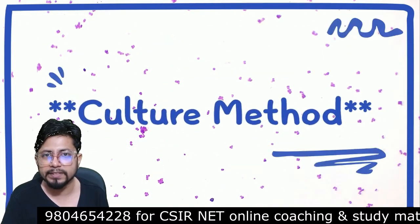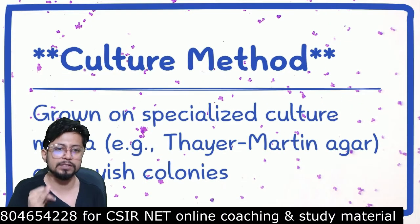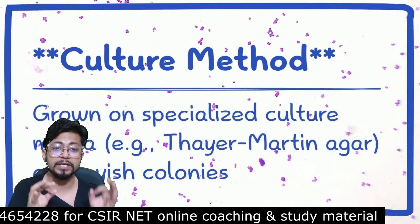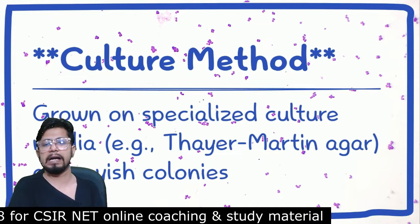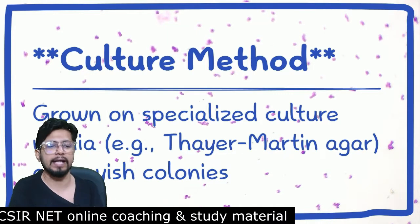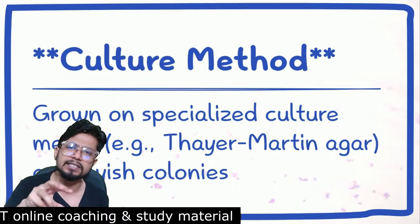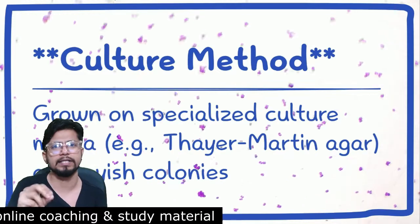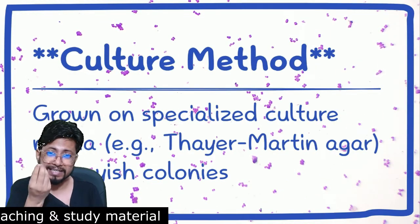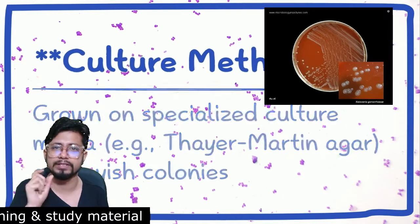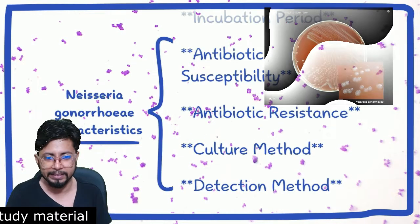Regarding culture methods, Neisseria gonorrhoeae is grown on specialized culture media — for example, Thayer-Martin agar. On Thayer-Martin agar, it produces grayish colonies. You can identify the colony of Neisseria gonorrhoeae bacteria by its gray color, which is the indication for its growth.